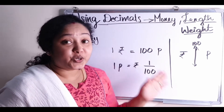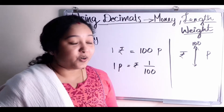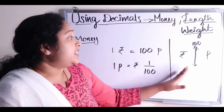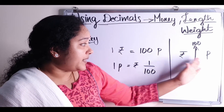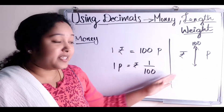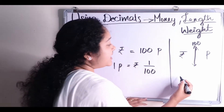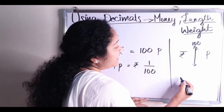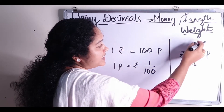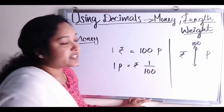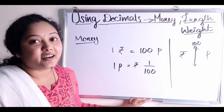To find rupees, or convert paise to rupees, divide the number by its power of relation — that means 100.